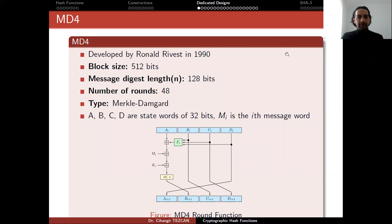Now we can discuss dedicated designs, and I will start from older to newer. So I'm starting with MD4. It was developed by Ronald Rivest in 1990. The block size in this algorithm is 512 bits, and the message digest length, so the output hash length, is 128 bits. Number of rounds are 48, and its type is Merkle-Damgard. And the idea is given in this picture.